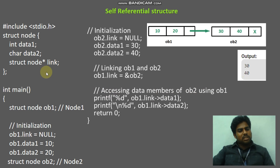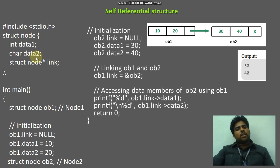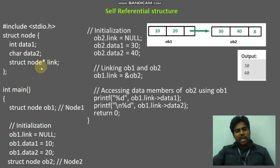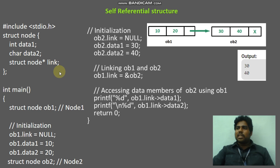What is self-referential structure? It is nothing but it has one member as a pointer which denotes the same data type. It is known as self-referential structure. Thank you, students.